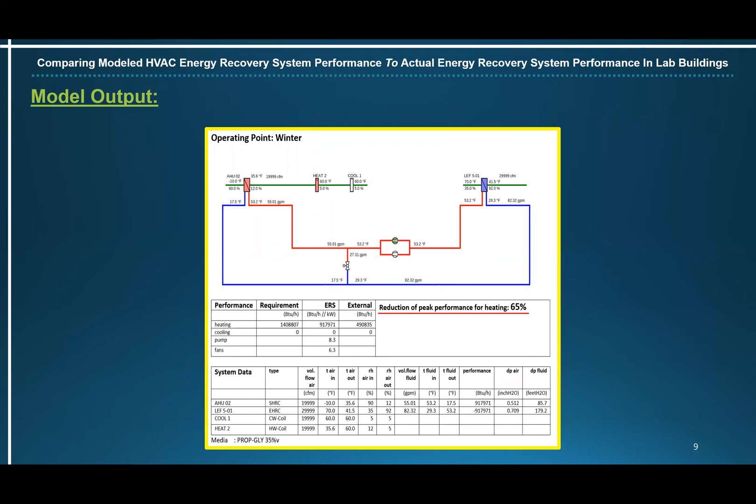And one last slide of output. This shows the reduction in peak heating requirement — you can see that it's reduced by 65%. Knowing this, you can properly size boilers, taking into account the 65% reduction in peak heating demand.